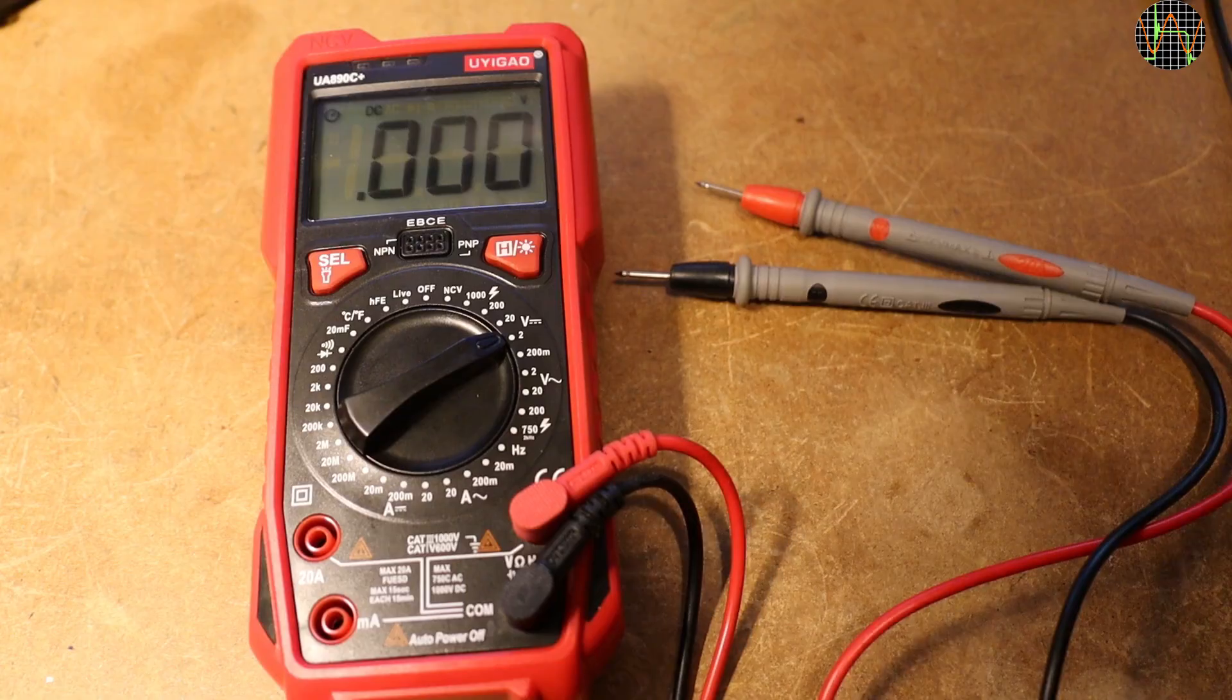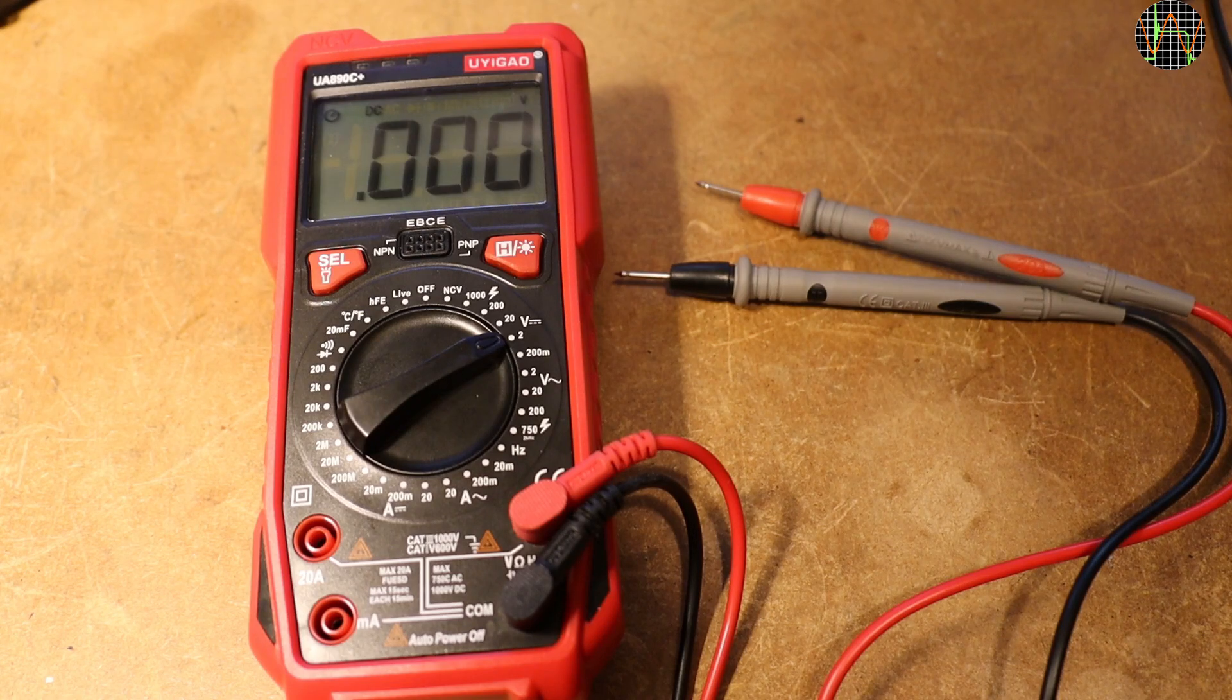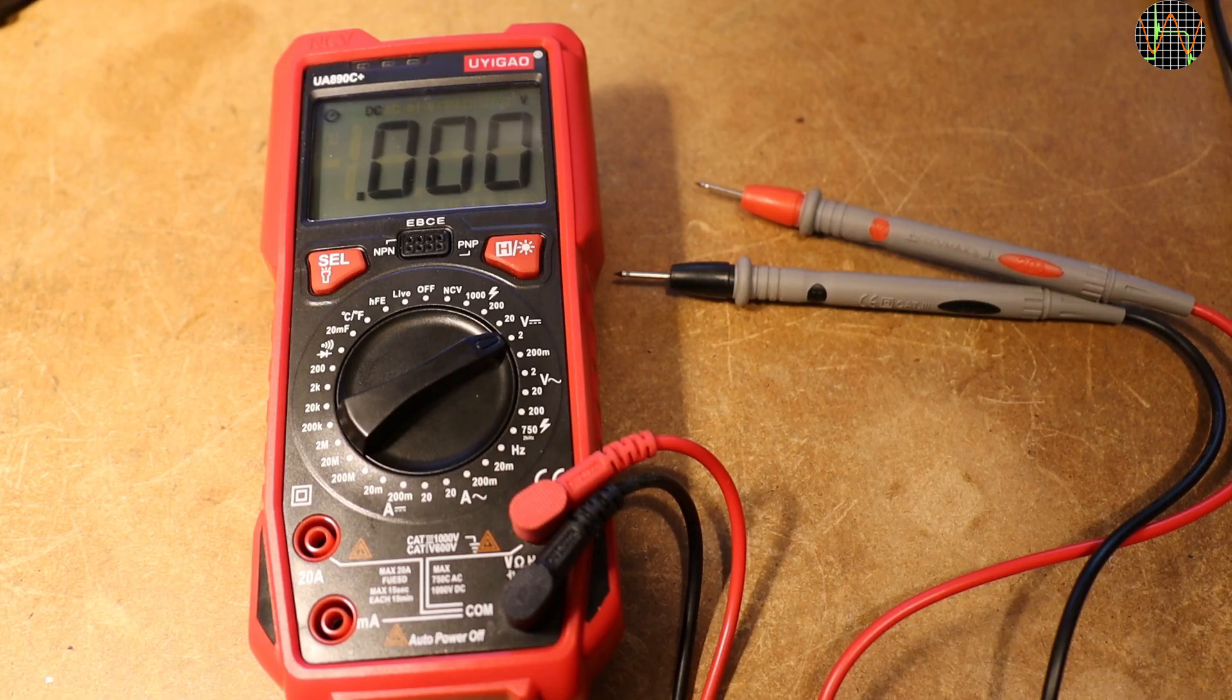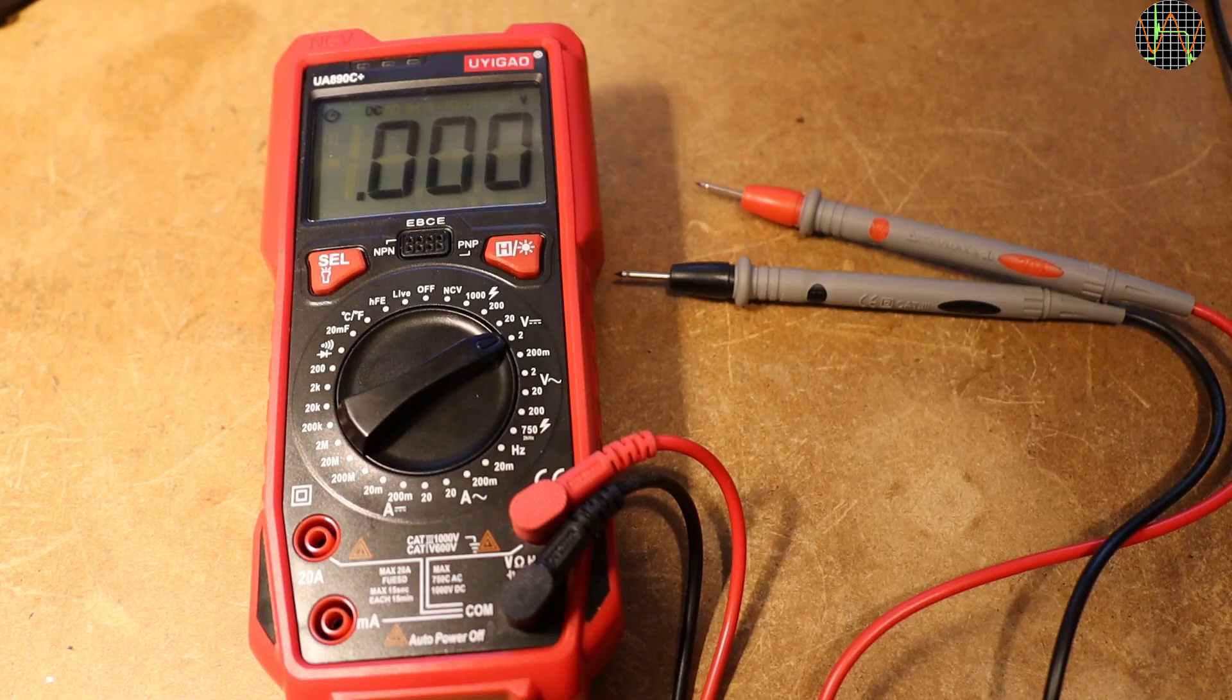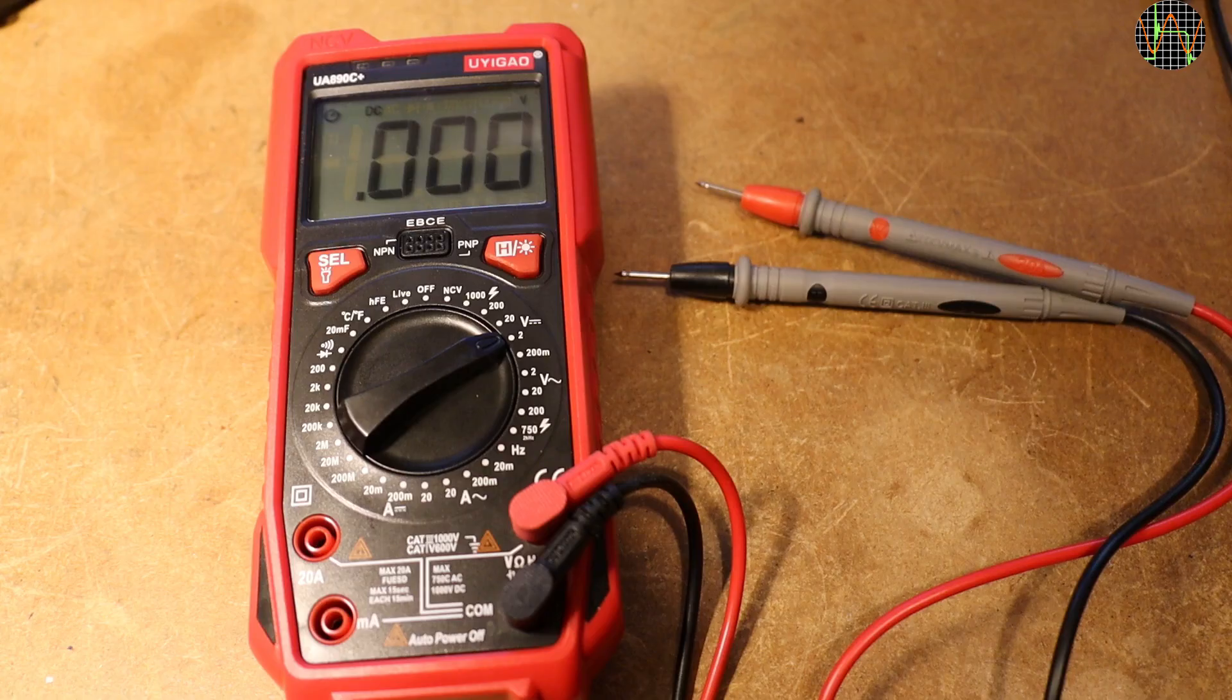I don't think there is any doubt, the UA890C Plus is NOT a meter I recommend for anyone. False CAT markings, fake fuses and not even a manual that can be trusted like on input resistance, this is a prime example of a meter to avoid, despite that many functions are actually working ok. I would go one step further and avoid ANY meter from UYIGAO. If enough people do that, maybe they get the message.